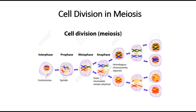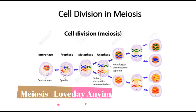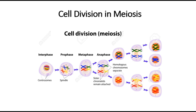Now let's go to meiosis phase two. In prophase two, the chromosomes and the spindle start to form. In metaphase two, chromosomes line up in a single file in the middle — they are not in pairs in this phase. In anaphase two, chromatids pull away from the spindle fiber. In telophase two, new nuclei form, the two cells divide, and four cells are formed. Then cytokinesis follows to completely split the cytoplasm. In meiosis, males produce sperm cells while females produce egg cells.